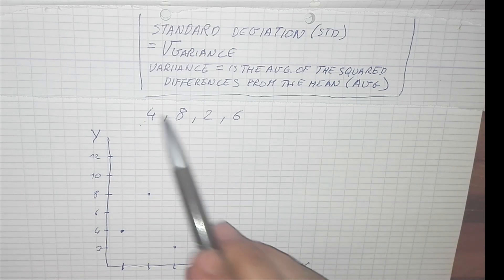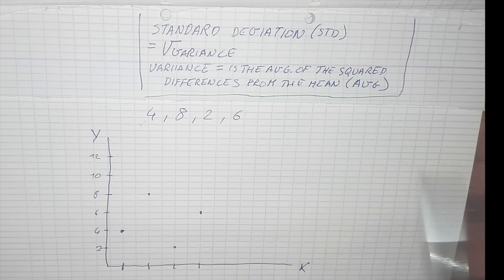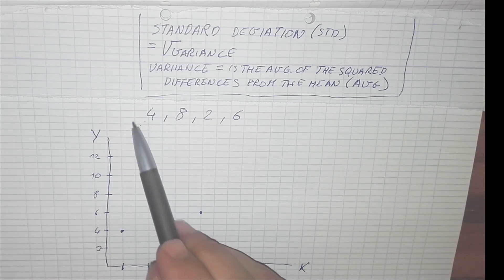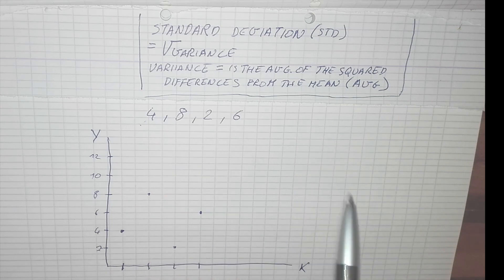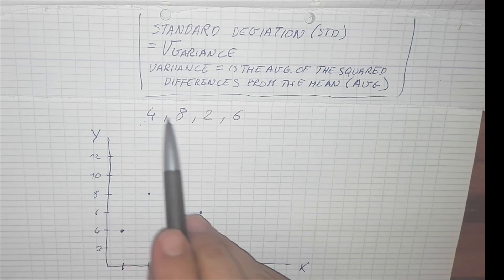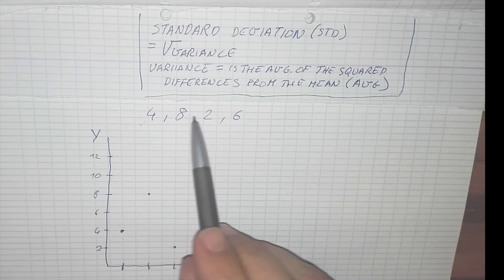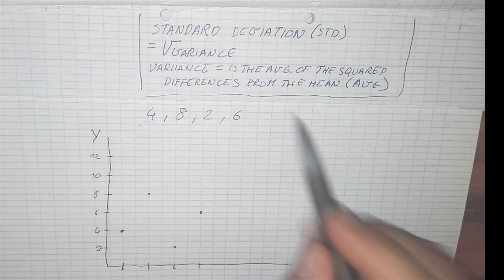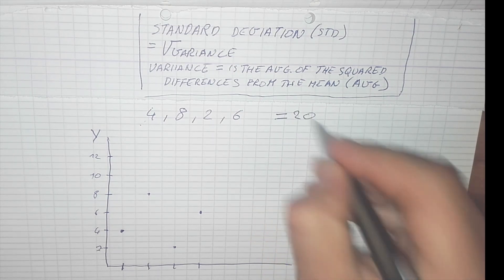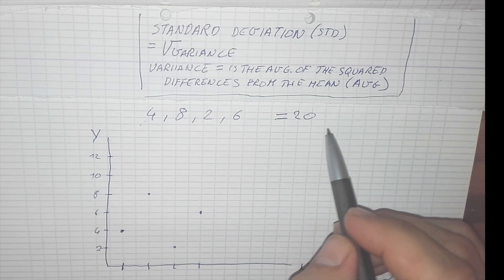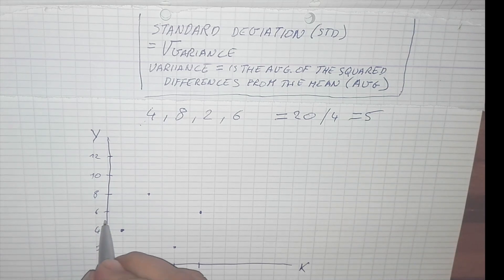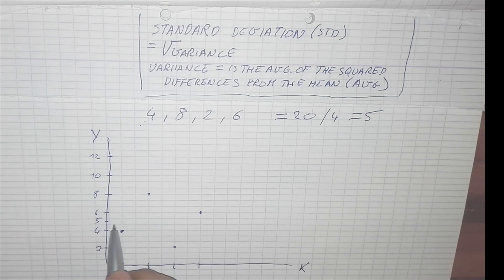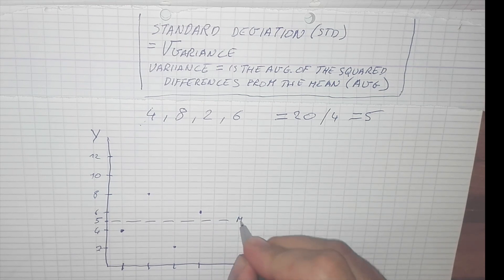Now we have to calculate. The variance is the average of the squared differences from the mean, so we have to calculate the mean first. That's very easy. We have numbers 4, 8, 2, 6 — we add them up and divide by the amount of numbers we have, which is 4. So 4 plus 8 is 12, plus 2 is 14, plus 6 is 20. Divide by 4 gives us 5. So the mean is 5, which is somewhere here on the line.